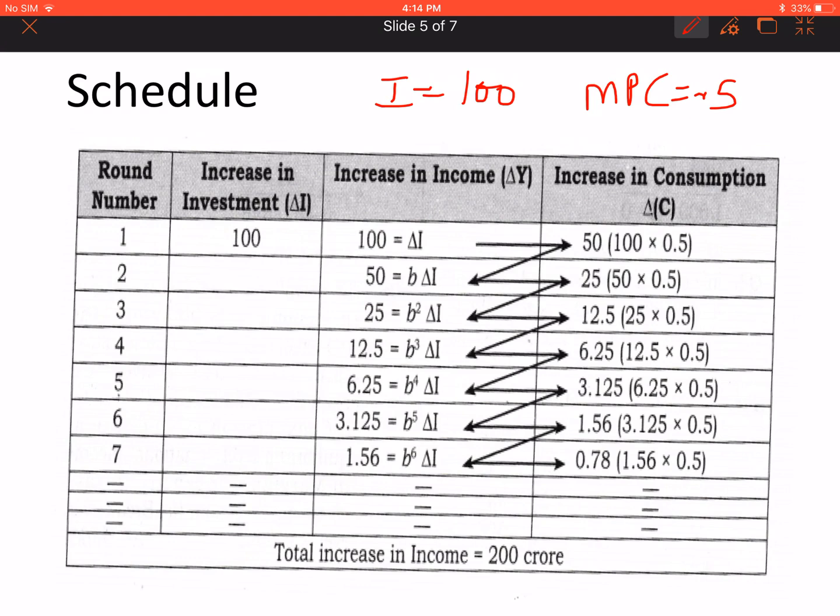So increase in investment of 100 results into increase in income of another person. Whatever increase in income happened, what proportion is going to consumption? 0.5, meaning 50%. So 50 rupees moves into consumption and 50 rupees moves to saving. Now this 50 that went to consumption - if a person has done consumption expenditure, then it becomes income of another person. So this 50 results into income of another person. This is again the new change in income: 50.